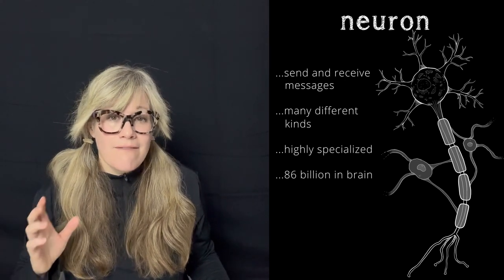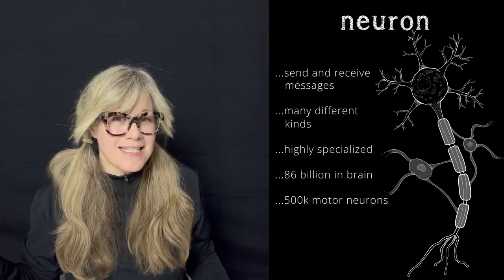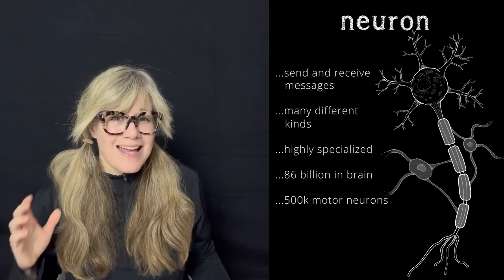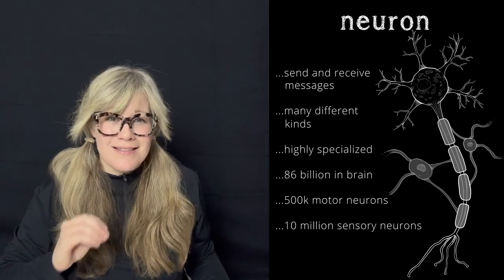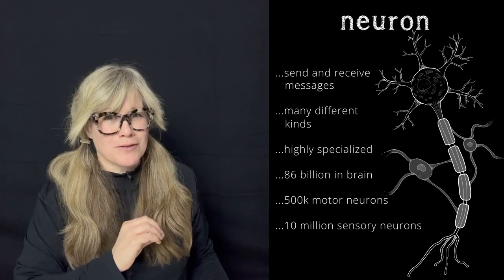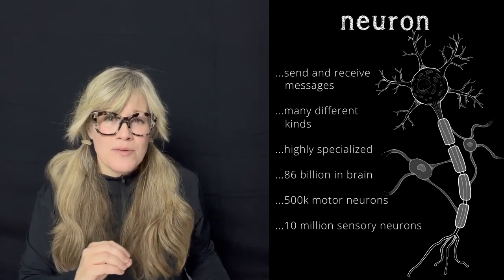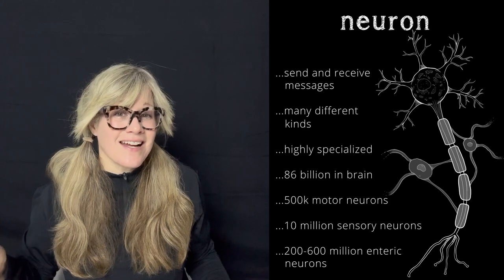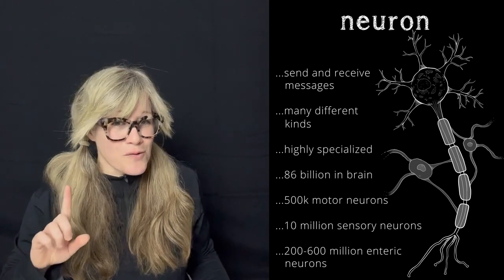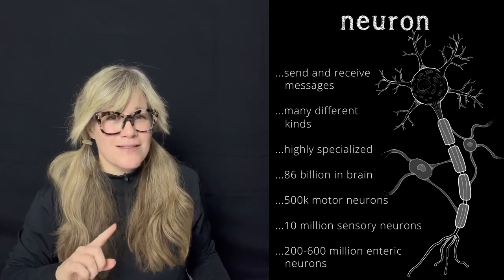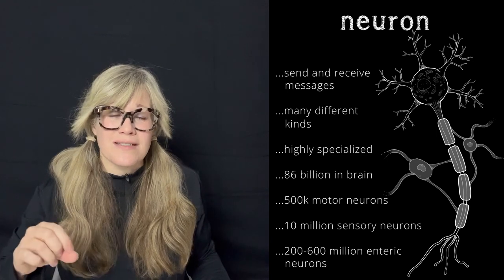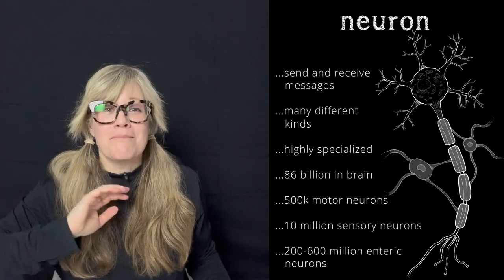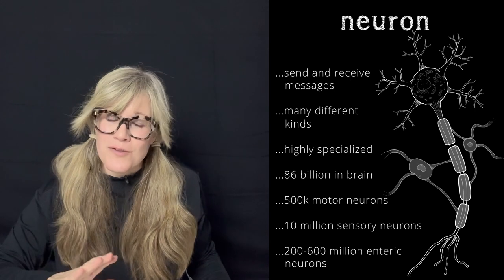There are 500,000 motor neurons in the efferent division of the peripheral nervous system, 10 million sensory neurons in the afferent division of the peripheral nervous system, and somewhere between 200 and 600 million neurons in the enteric nervous system, which is located in the wall of your gastrointestinal tract. Yes, you have millions of neurons outside of your brain.